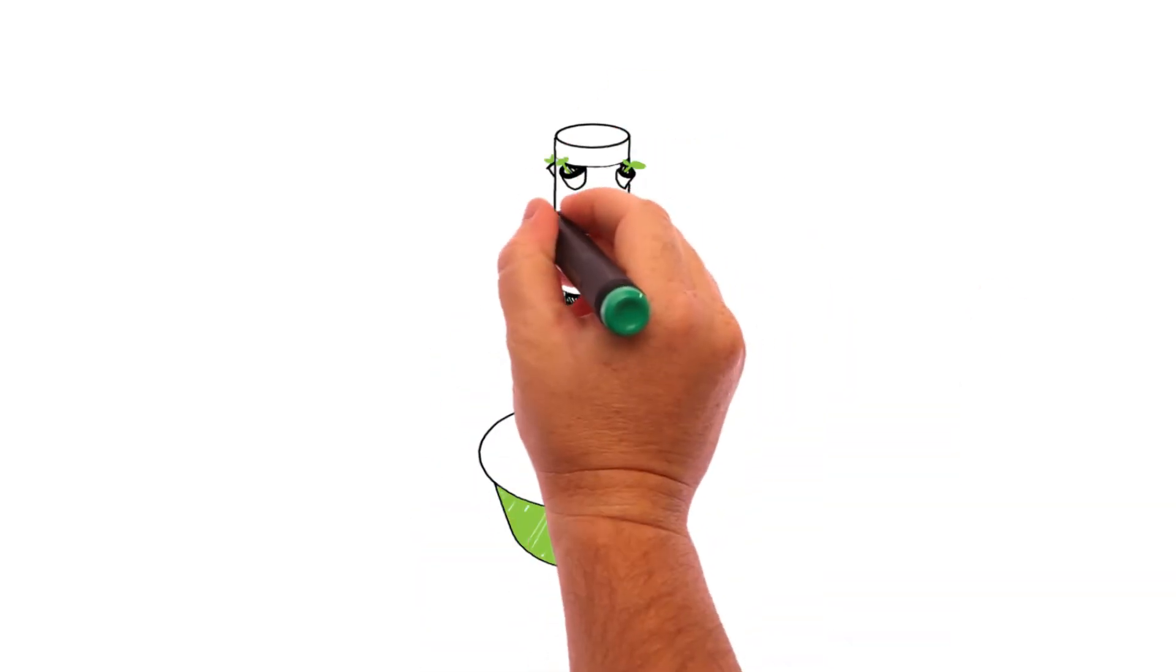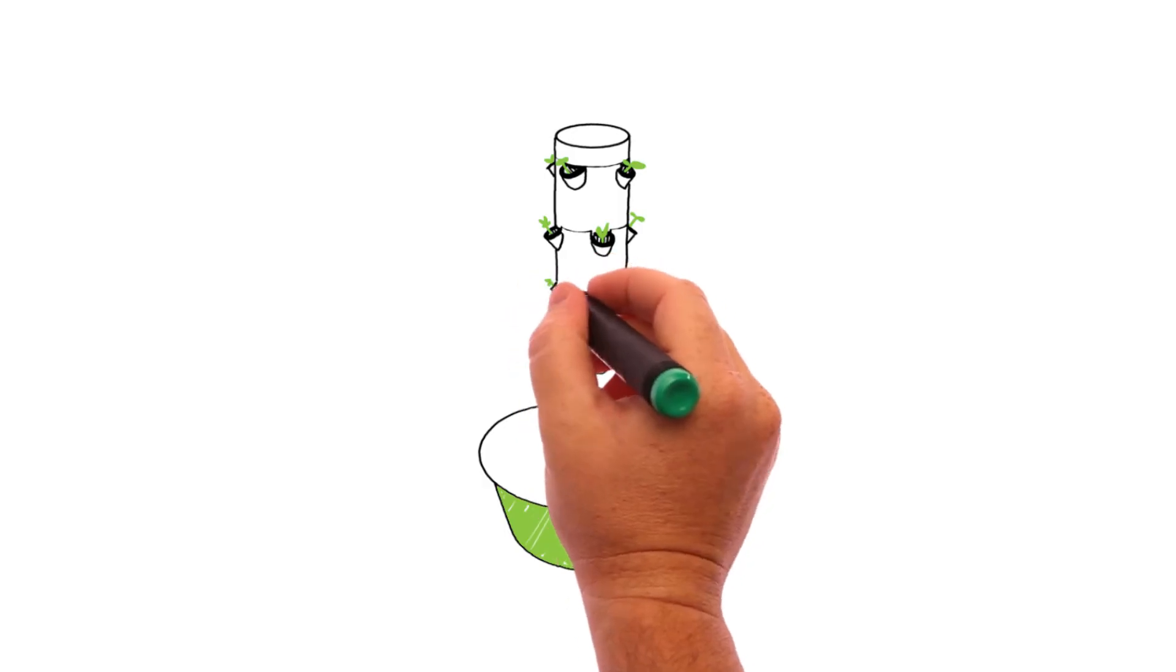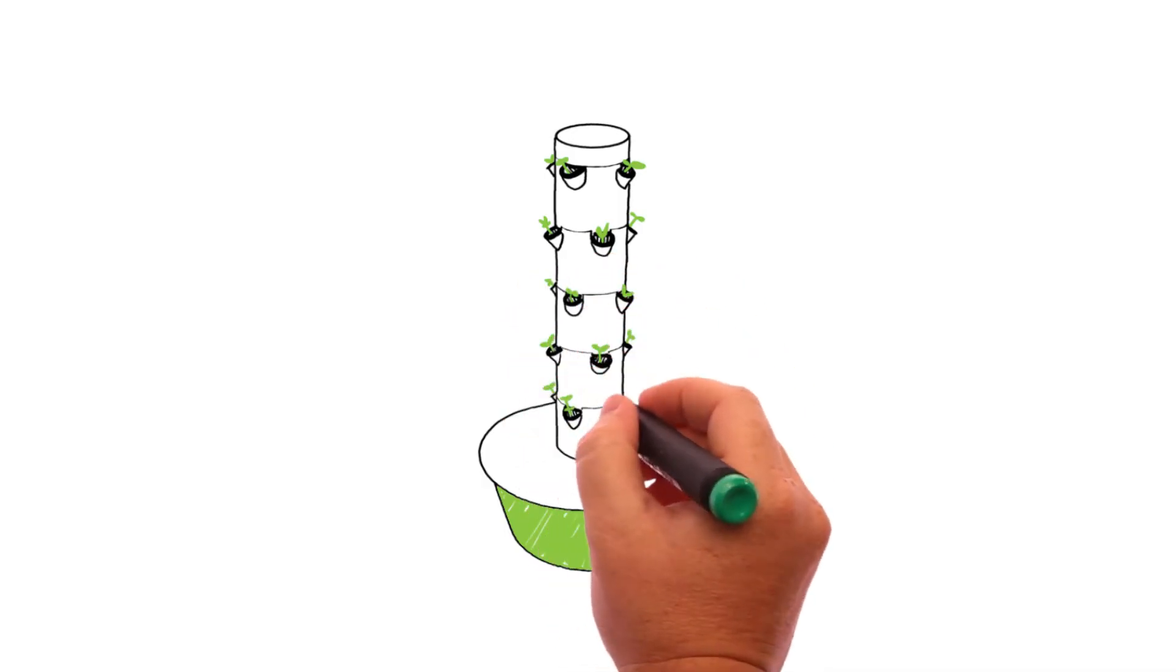The process begins once the seedlings have been placed in your Tower Garden. Here they will be nourished with Tower Tonic nutrient solution.